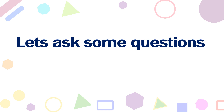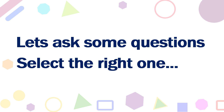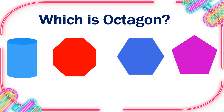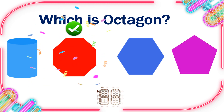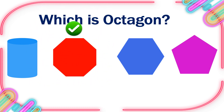Let's ask some questions. Select the right one. Which is Octagon? 10, 9, 8, 7, 6, 5, 4, 3, 2, 1, 0. This is the right one.